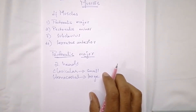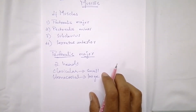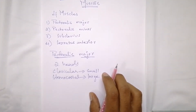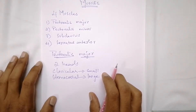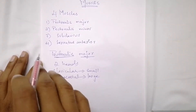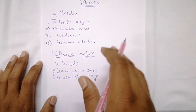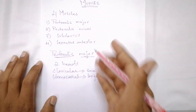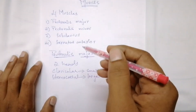In summary, pectoralis major's clavicular head arises from the anterior surface of the middle half of the clavicle, and the sternocostal head arises from the anterior surface of the sternum, the superior six costal cartilages, and the aponeurosis of the external oblique muscles. The distal attachment is into the lateral lip of the intertubercular sulcus of the humerus.